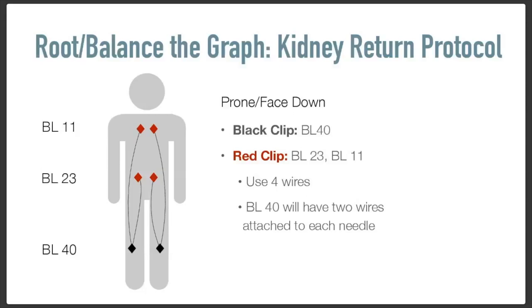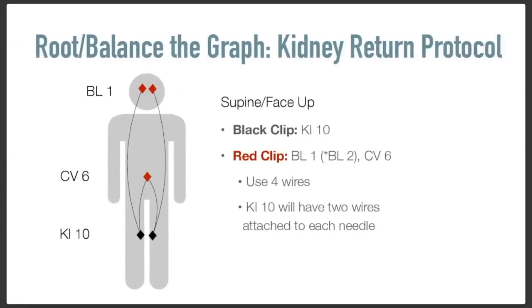Mikishima said sometimes he would use this only as his root treatment; other times he would do this treatment alone for 10 minutes and then move on to his next treatment so that the next treatment could be better. If your patient couldn't lie face down and needed to be more in the supine position, the points recommended by Mikishima were Kidney 10, CV 6, and Bladder 1. CV 6 would have two clips to it. I'm still not comfortable with needling Bladder 1 — I would do Bladder 2. So you're using four wires, and Kidney 10 will have two wires, and so will CV 6.